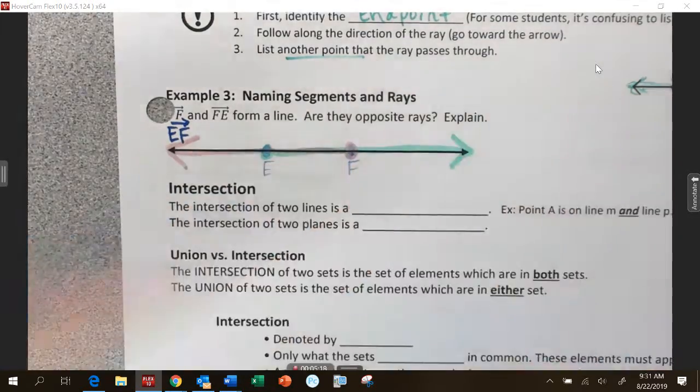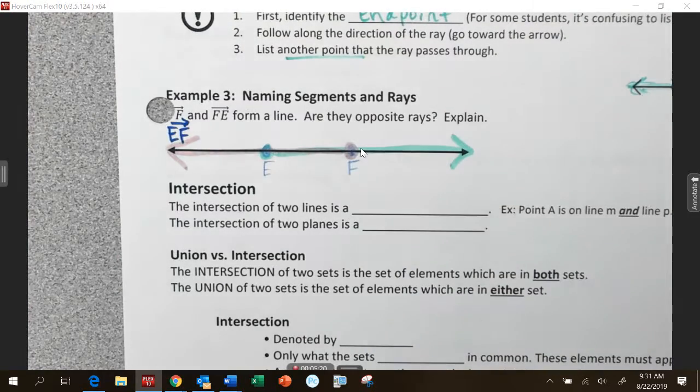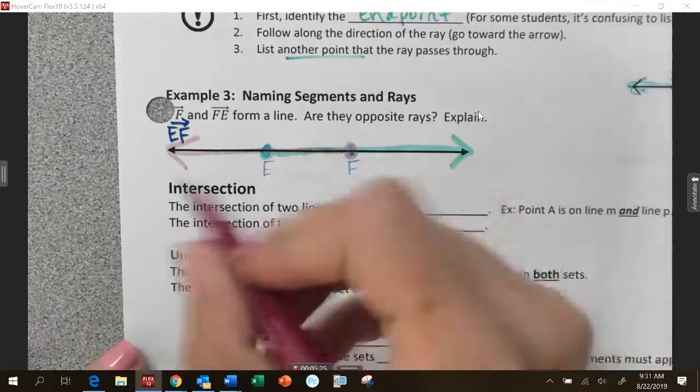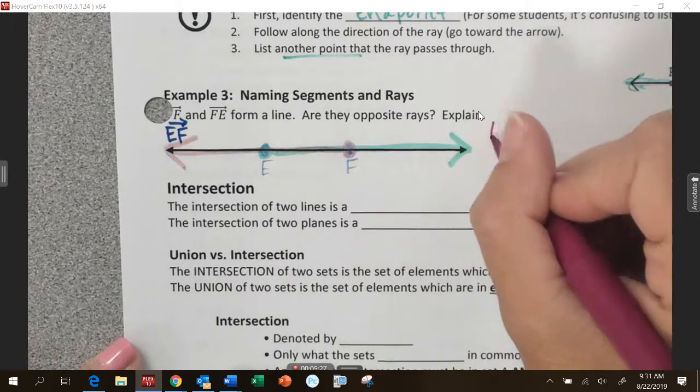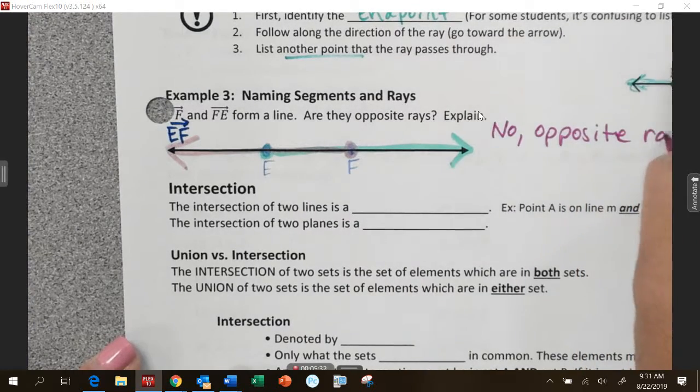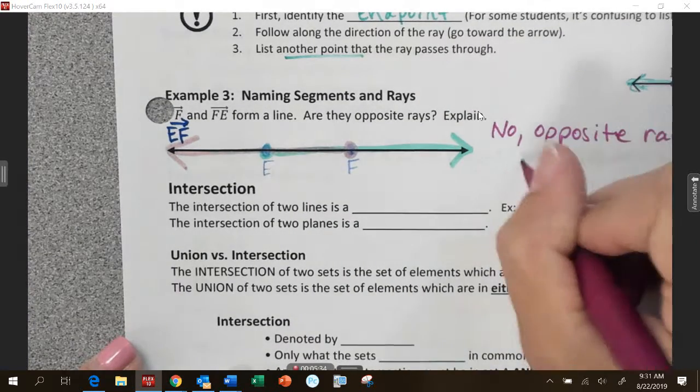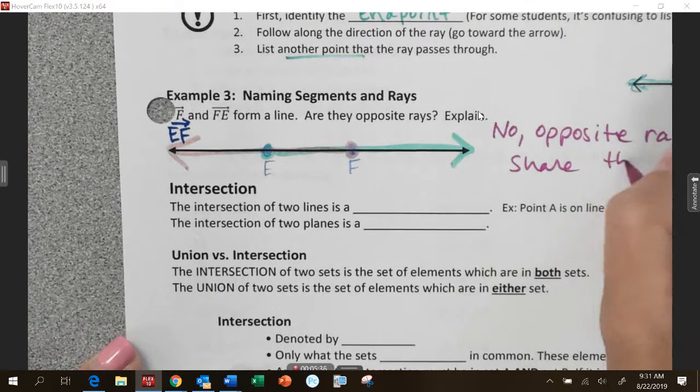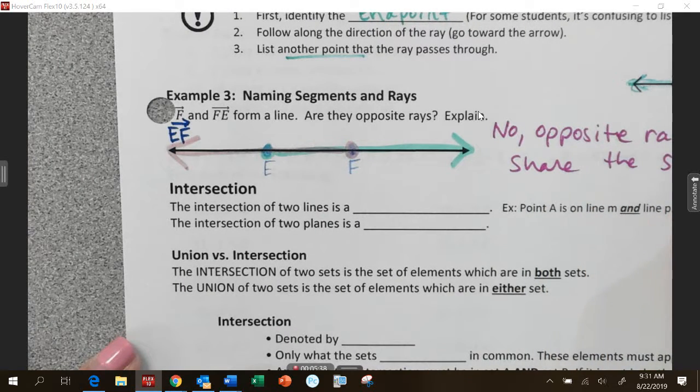So, these overlap. They're going towards each other. They do form a line, but they are not opposite rays. So, opposite rays share the same endpoint. So, you are correct. Are they opposite rays? No. So, opposite rays share the same endpoint.